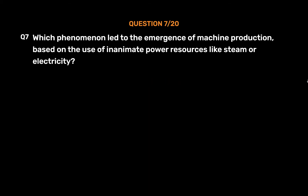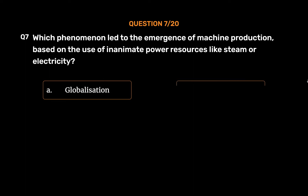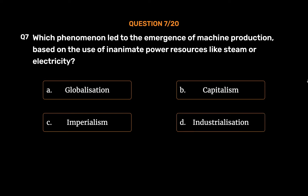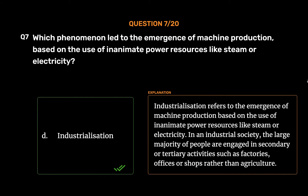Question 7: Which phenomenon led to the emergence of machine production based on the use of inanimate power resources like steam or electricity? Options: A. Globalization, B. Capitalism, C. Imperialism, D. Industrialization. The correct answer is Option D: Industrialization. In an industrial society, the large majority of people are engaged in secondary or tertiary activities such as factories, offices, or shops rather than agriculture.